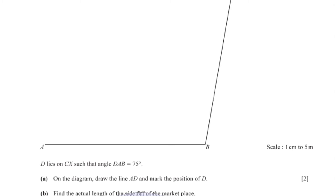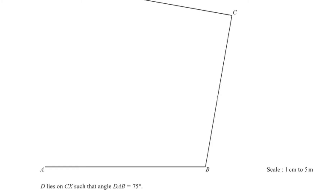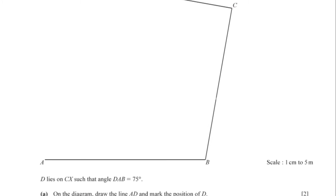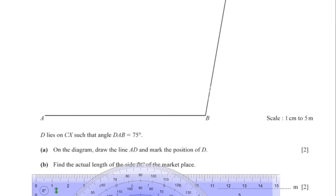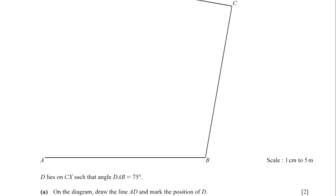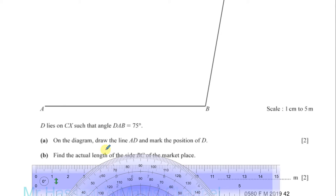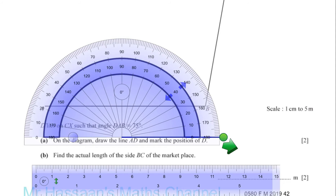D lies on CX, somewhere along this line, such that angle DAB is 75 degrees. They've asked us to draw the line AD and mark the position of D. I'm going to need a protractor for this.